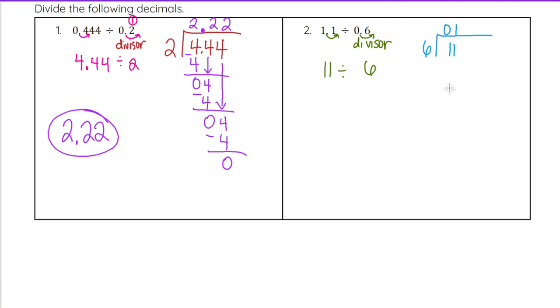6 does go into 11 one time. So we put 1 up here. 1 times 6 is 6, and then we subtract. 11 minus 6 is 5. Now 6 does not go into 5, so we need to go ahead and put a decimal point, just like we practiced previously, and put a 0 after that. So we'll bring that 0 down.